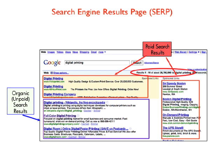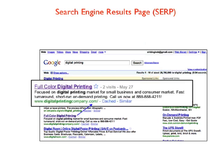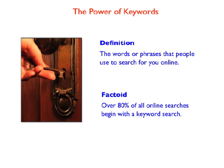The short answer for how a company gets to the very top of 26 million results is keywords — one of the main tools for driving visitors to your website. Search engines constantly scour the internet and your website looking for keywords: words and phrases that people use to search for you online. It behooves you to think about what your customers or prospects will use to try to find services you provide. Over 80% of all online searches begin with a keyword search.